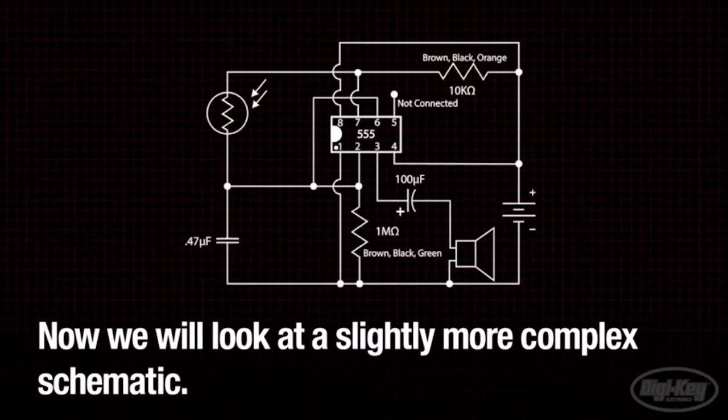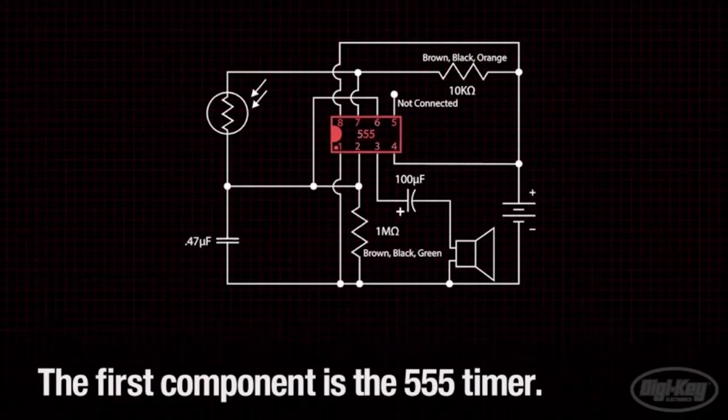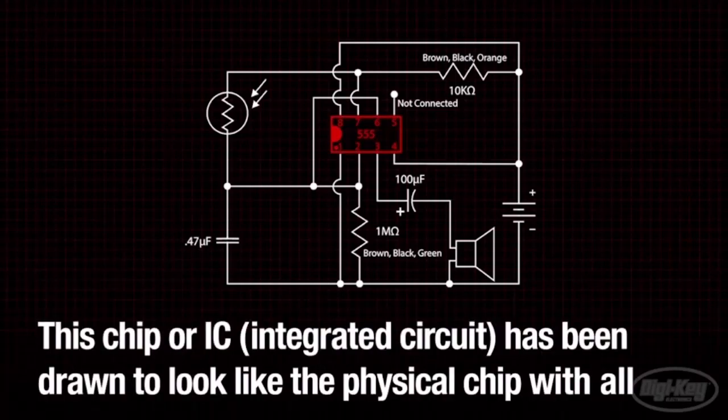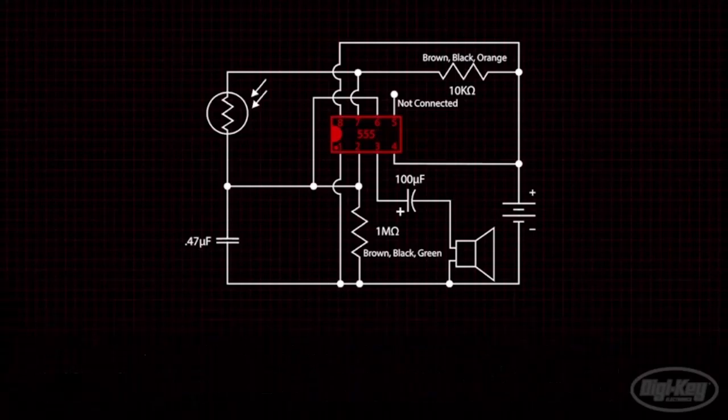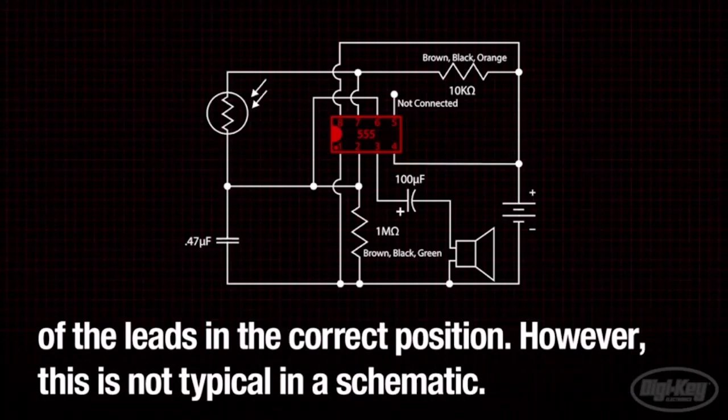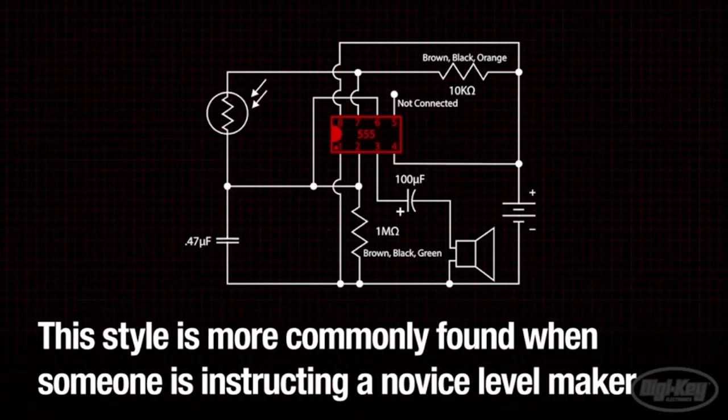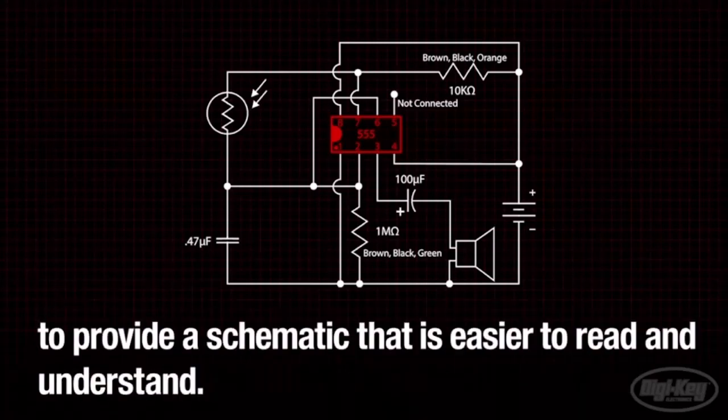Now let's look at a slightly more complex schematic. The first component I want to point out is the 555 timer. This chip or IC has been drawn to look like the physical chip with all of the leads in the correct position. However, this is not typical in a schematic. This style is more commonly found when someone is instructing a novice level maker to provide a schematic that is easier to read and understand.